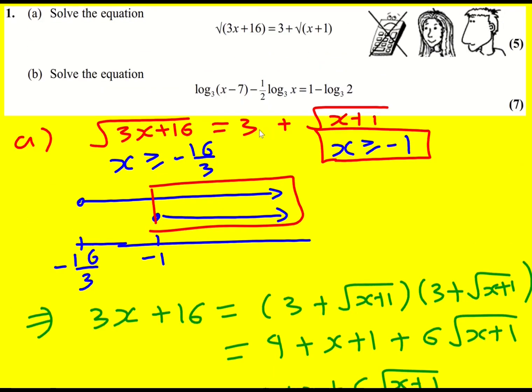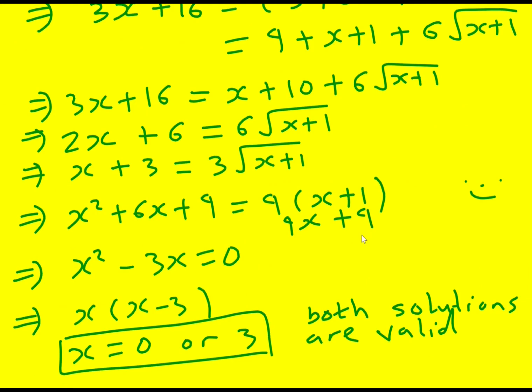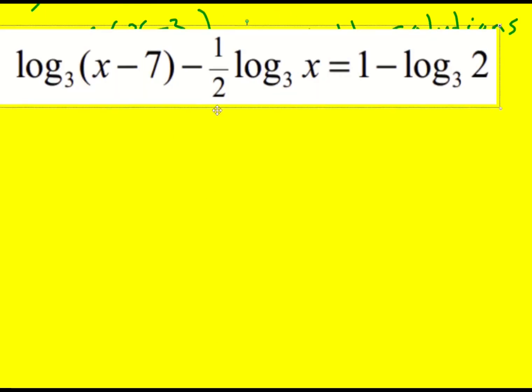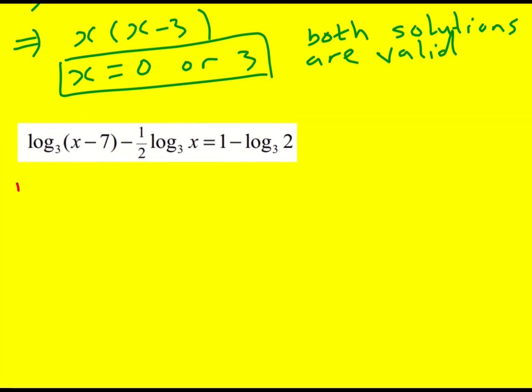That was part A. Now we've got a log equation to look at. What I want to do here basically is bring the logs all together. So I can write down log to base 3 of x minus 7 minus log to base 3 of x to the half, which is the square root of x. Then I'm going to plus log to base 3 of 2, and that is equal to 1.